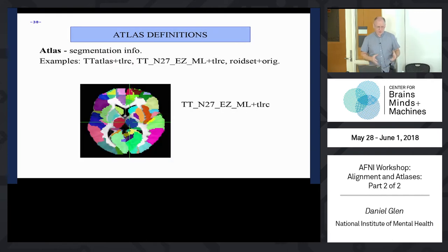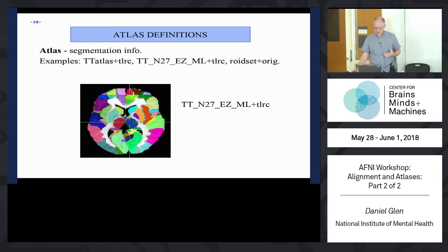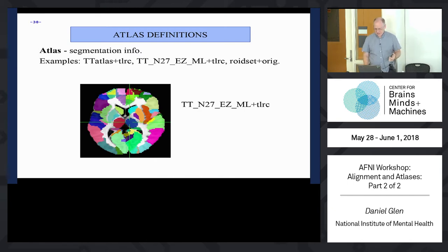An atlas is where the segmentation or parcellations are stored. They generally look like multi-colored images where every voxel is assigned a region and a name - the region has a number, a name, and a particular intensity and index. This is the Eickhoff-Zilles macro label atlas in TTN27 space.